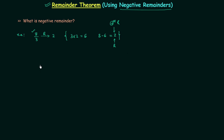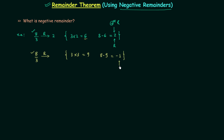Now we will obtain the negative remainder for the same division, 8 by 3. To get the negative remainder, we find the number closest to and greater than 8 that is a multiple of 3. We multiply 3 by 3 to get 9, which is closest to 8 but greater. We needed 8 but we have 9, so 8 minus 9 equals minus 1. This is the negative remainder. So for this division, 2 is the positive remainder and minus 1 is the negative remainder.